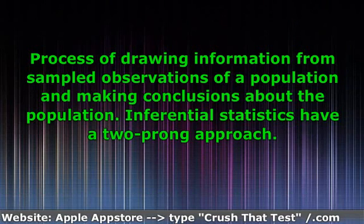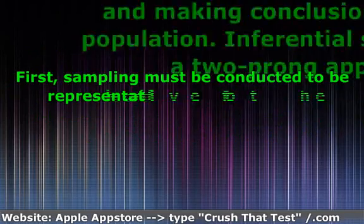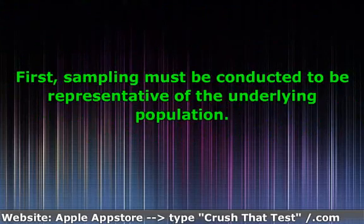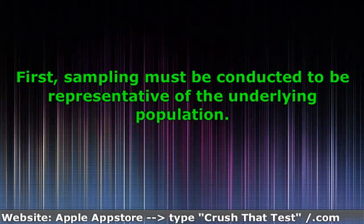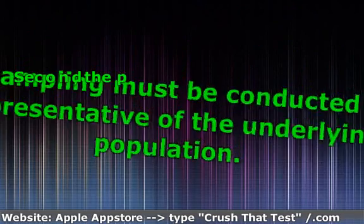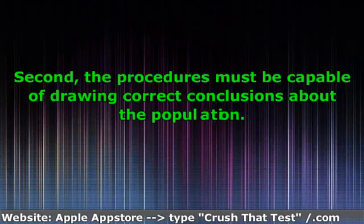Inferential statistics have a two-prong approach. First, sampling must be conducted to be representative of the underlying population. Second, the procedures must be capable of drawing correct conclusions about the population.